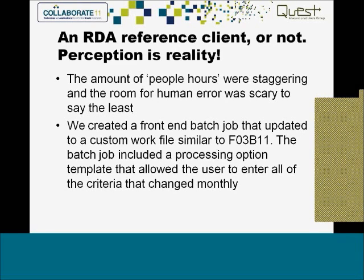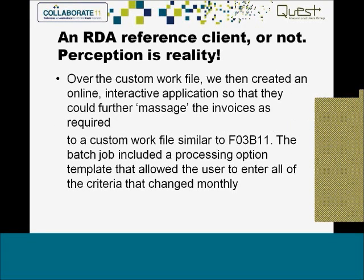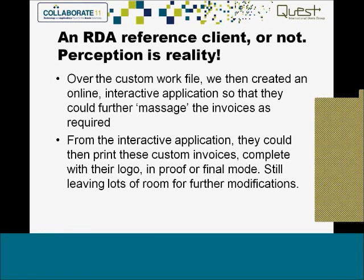These invoices were going out and no one could rely on them. So what we did is we created a front-end batch job from scratch that updated to a custom work file similar to the O3B11. The batch job included a front-end processing option that allowed the user to enter all of the criteria that changed monthly. Then over the custom work file, we created an interactive application. So now they can go in, see their fine browse form, see all the invoices they've just created, and further massage them on a one-by-one or mass basis.